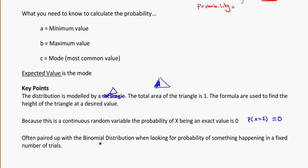Now this one is often paired up with binomial distribution when you're looking for the probability of something happening in a fixed number of trials. So for instance, the probability might show me how long I have to wait for the bus. And I can find out what the probability is, but then I could use binomial to figure out how long on average I'll have to wait for the bus on six different days or something.